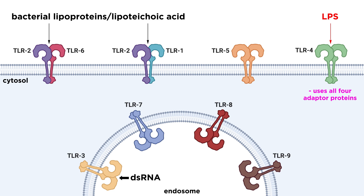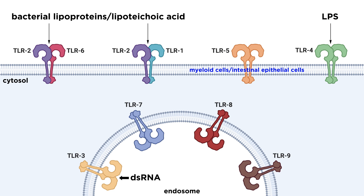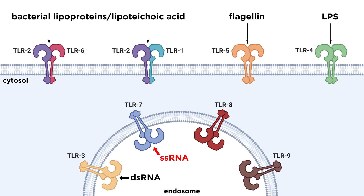TLR4 is unique in that it is the only known TLR to use all four adapter proteins, and it uses an accessory protein called MD2 to sense LPS. TLR5 is expressed on the surface of myeloid cells and intestinal epithelial cells, and binds to bacterial flagellin. Flagellin is a protein that is the main subunit of flagella, the whip-like structures many bacteria use to move around. Like TLR3, TLR7 is also an endosomal PRR, and it binds to single-stranded RNA.